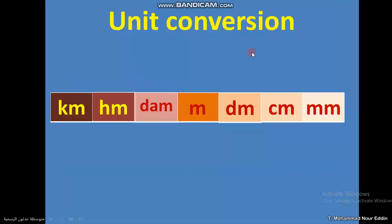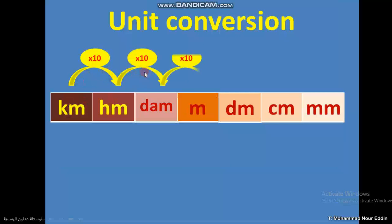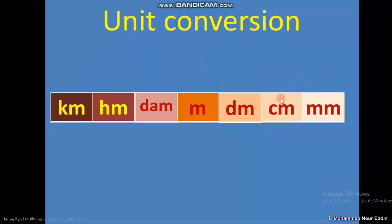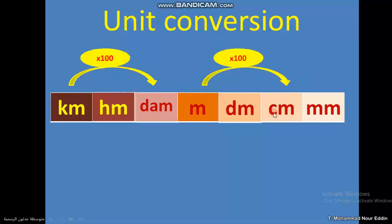Units conversion: if I go from kilometer to hectometer — one step from large to small — we multiply by 10. If I go two steps, we multiply by 100. From meter to centimeter is two steps, so two zeros — we multiply by 100. Each step down adds one zero; going from large to small we multiply.